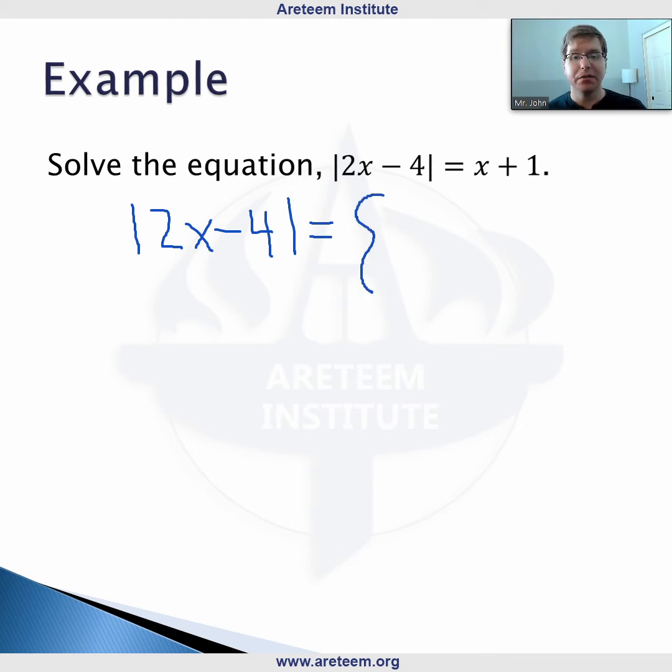We have a function here, so that function is itself, 2x minus 4, when that function is greater than or equal to 0. So when is 2x minus 4 greater than or equal to 0? Well that will happen as long as x is greater than 2, because when we plug in 2 we get 0 and this is a line increasing from there. It's negative that function, so negative 2x plus 4, when x is less than 2.